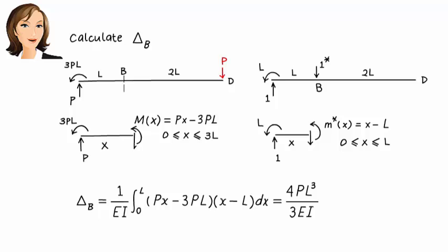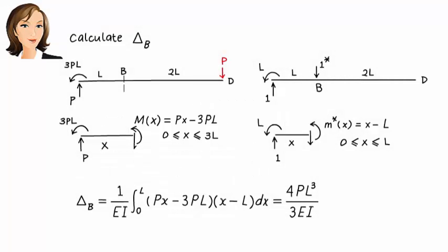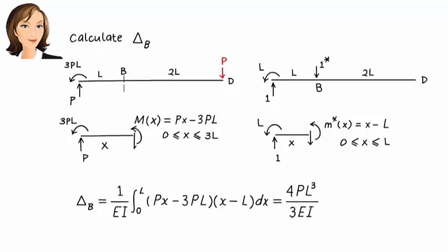First, we need to write the bending moment equation for the statically determinate beam under the applied load. Here is the equation. Next, we replace the applied load with the virtual vertical unit load placed at B and write the moment equation for the beam.